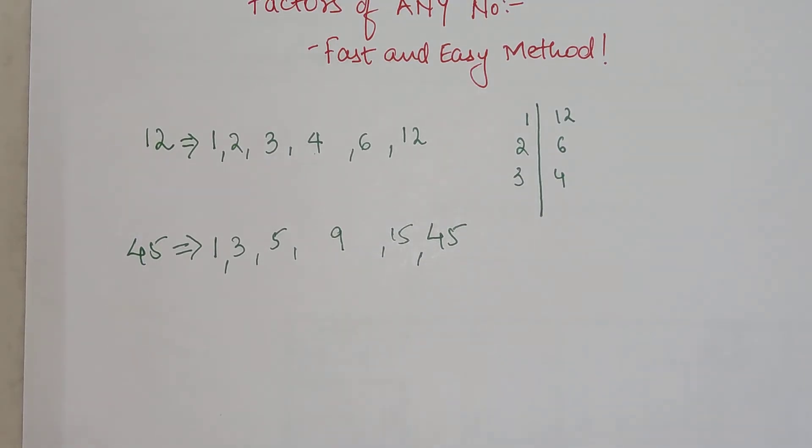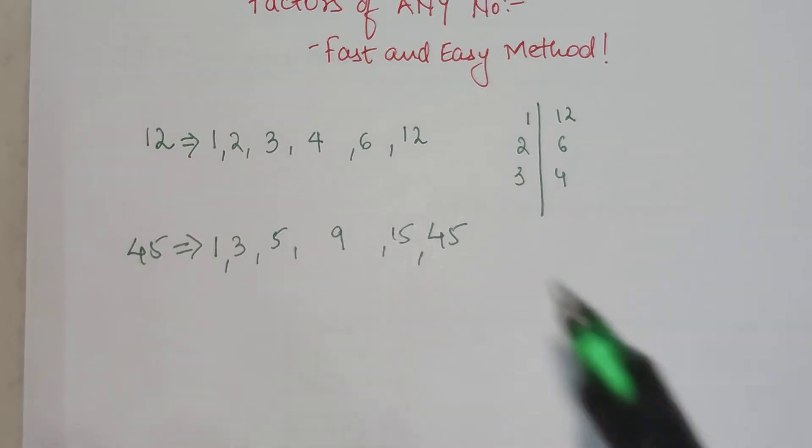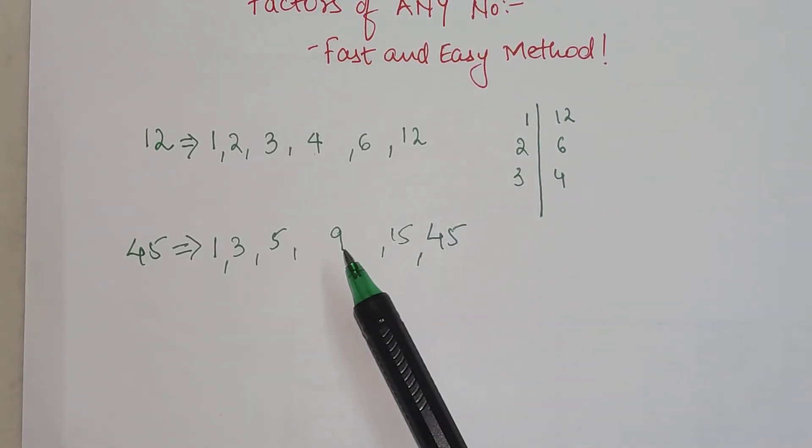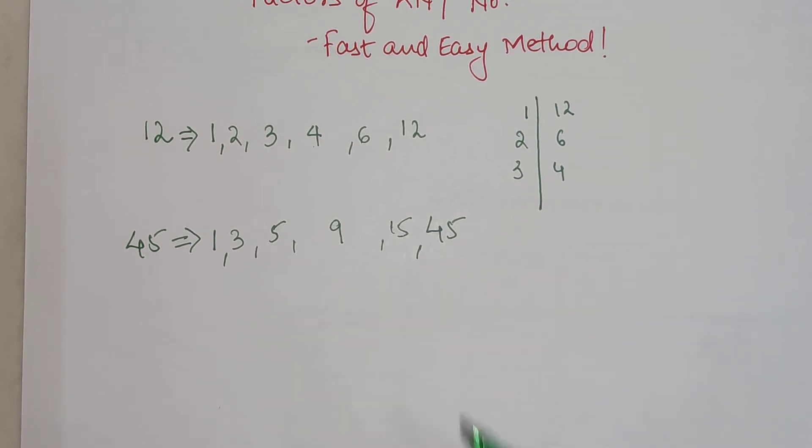After 5, which gets you 6, 6 doesn't divide 45. Then we have 7 which doesn't divide 45, and 8 also doesn't divide 45. Then we have 9, and after 9 we directly have 15, so everything is being taken care of.